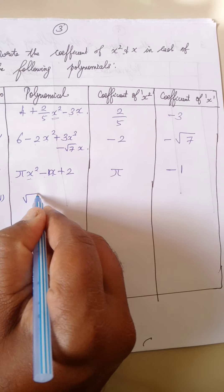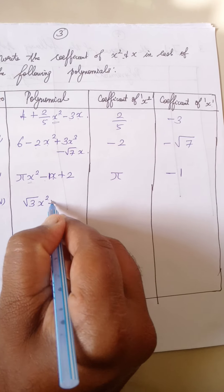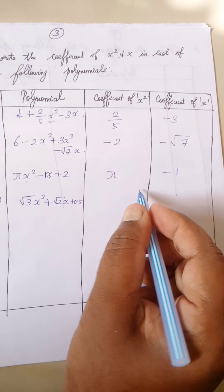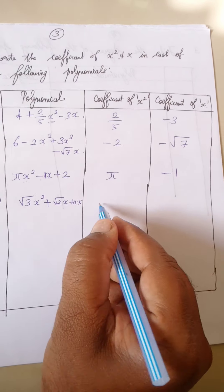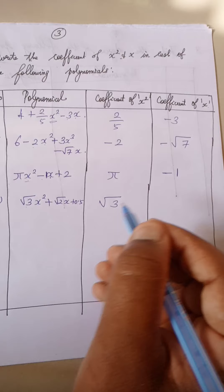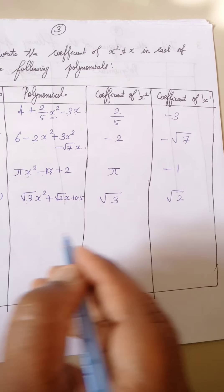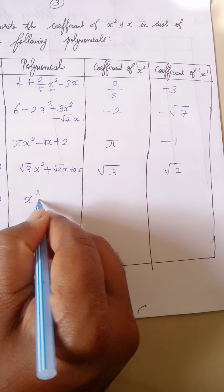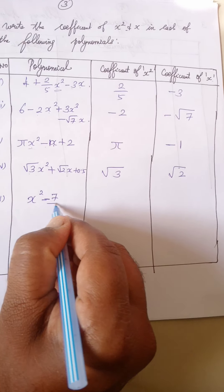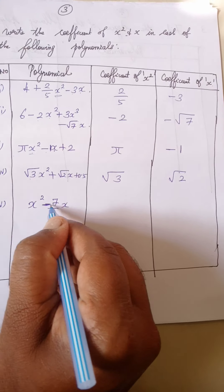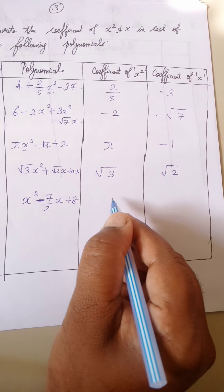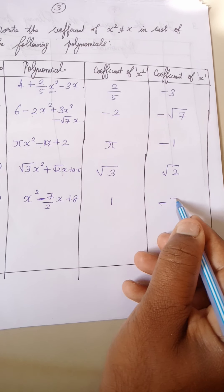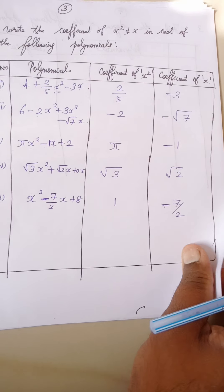Fourth one: root 3 x square plus root 2 x plus 0.5. Coefficient of x square is root 3. Coefficient of x is root 2. Fifth one: x square minus 7 by 2 x plus 8. Coefficient of x square is 1. Coefficient of x is minus 7 by 2.